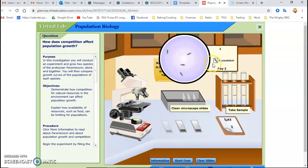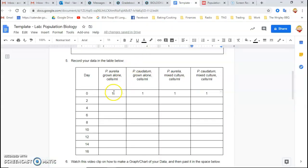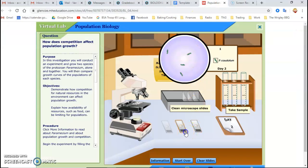And now I see in test tube one, on day two, I have one, two, three, four paramecium caudatum. Four. I have one, two, three, four, five paramecium aurelia.